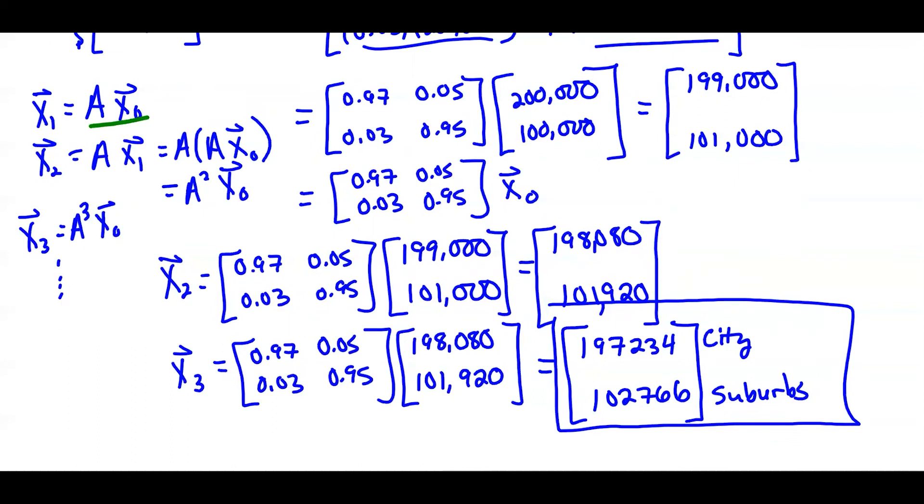And you can just keep going forward and doing this. And we could say, for any year, it would be A to the number of years after X of 0 to that power times the initial population vector.